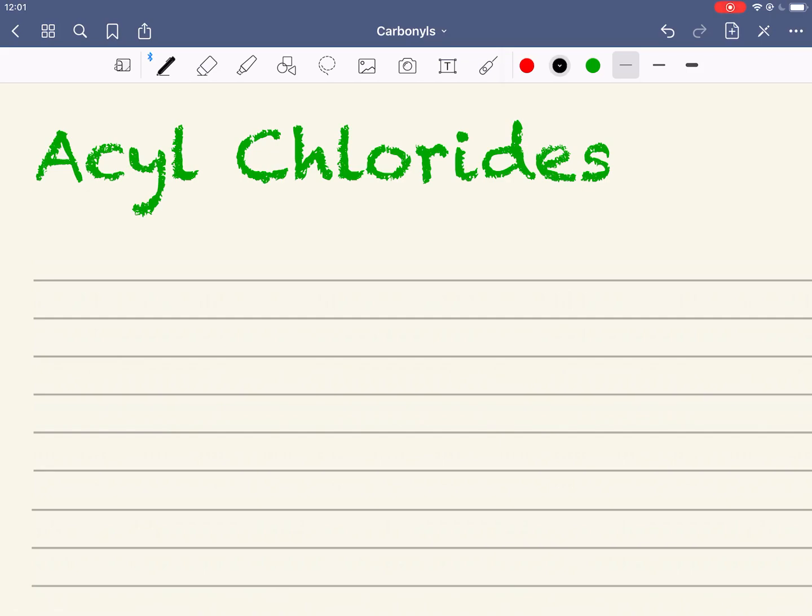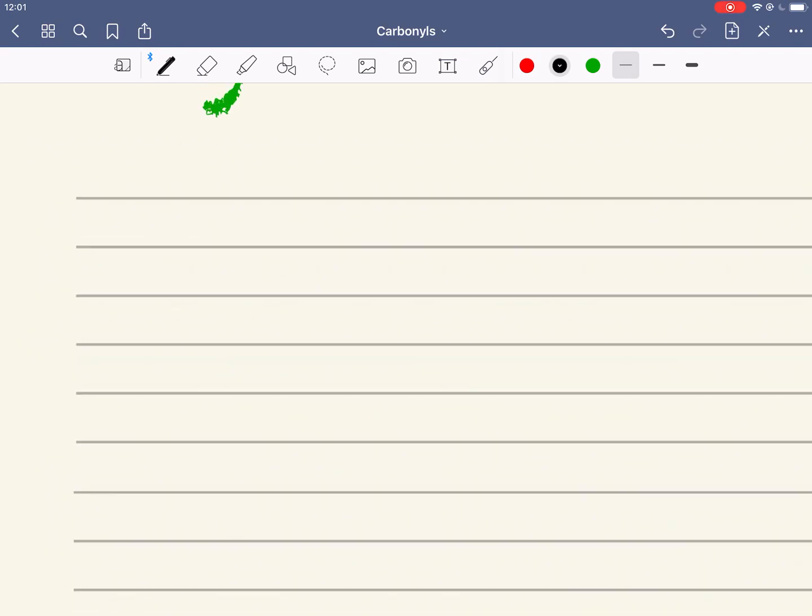Here we're going to look at the chemistry of acyl chlorides. Acyl chlorides have the following general structure, where we've got a chlorine atom bonded to a carbonyl carbon.